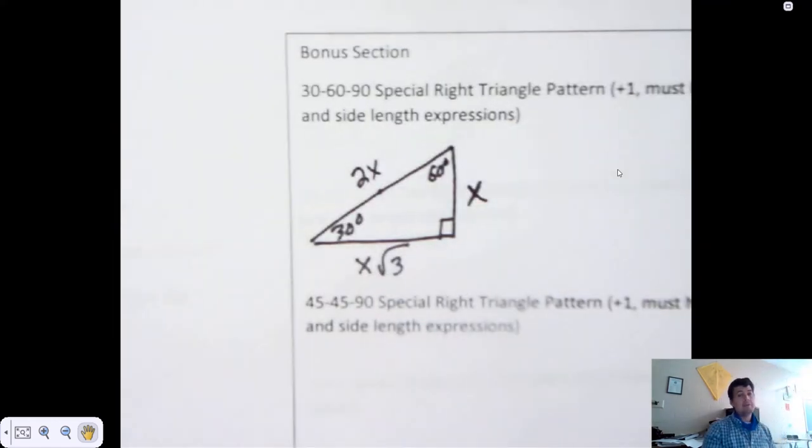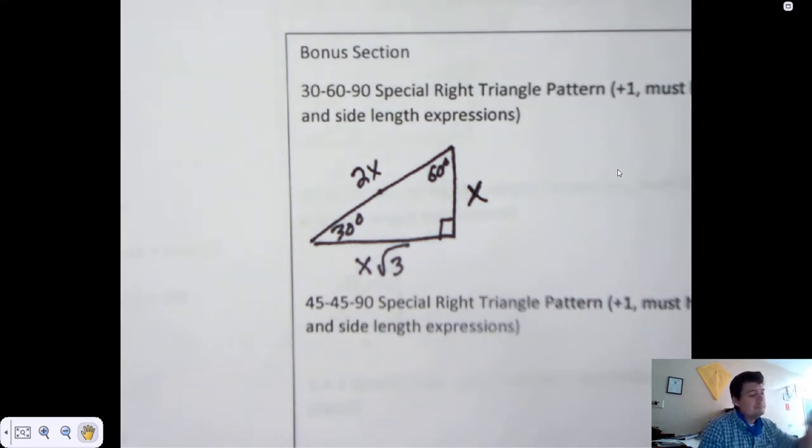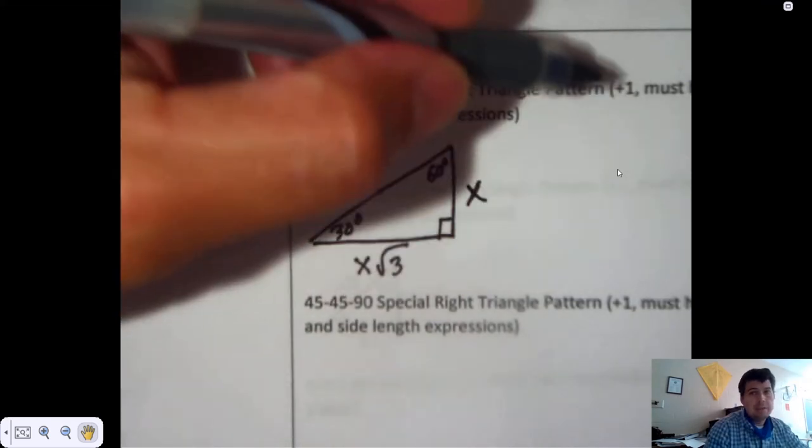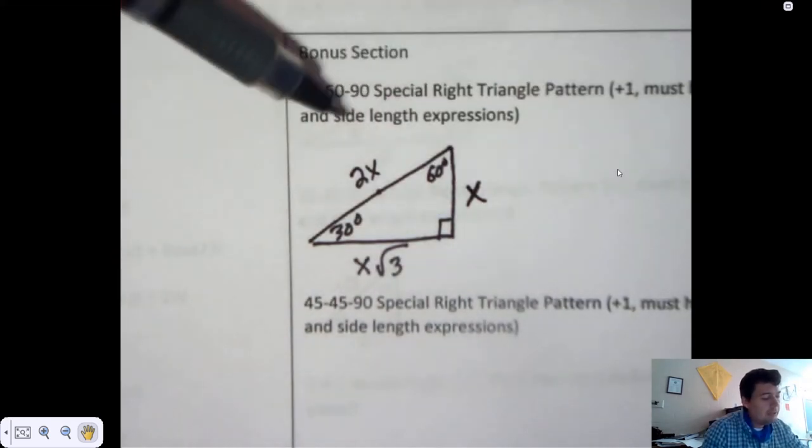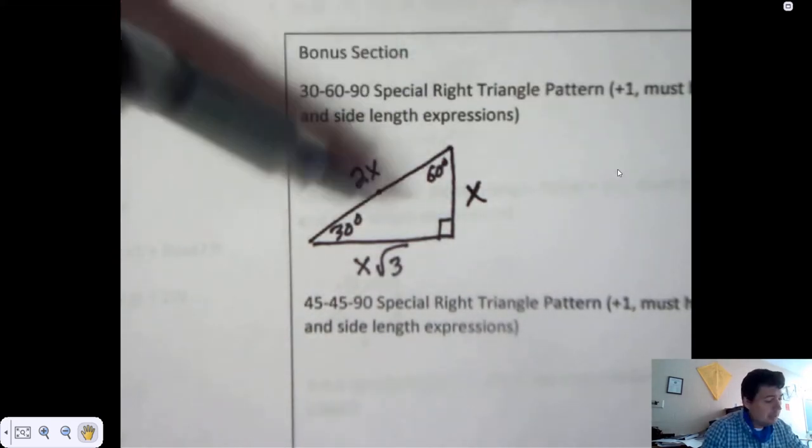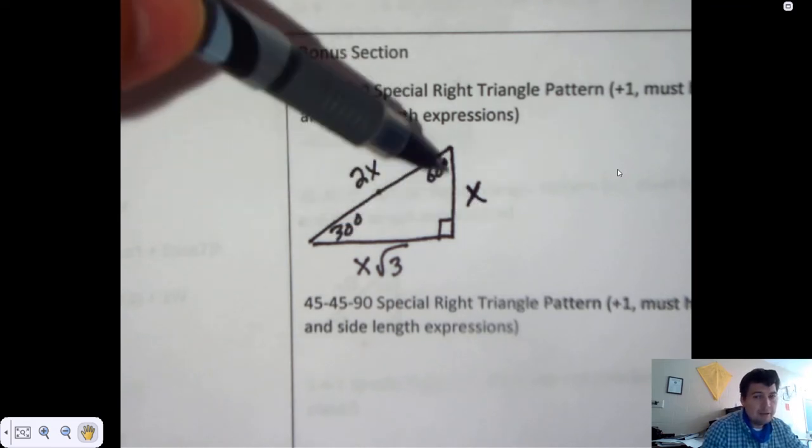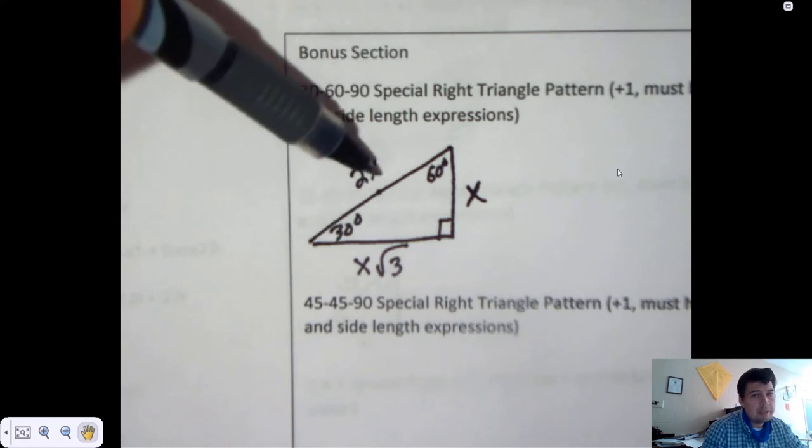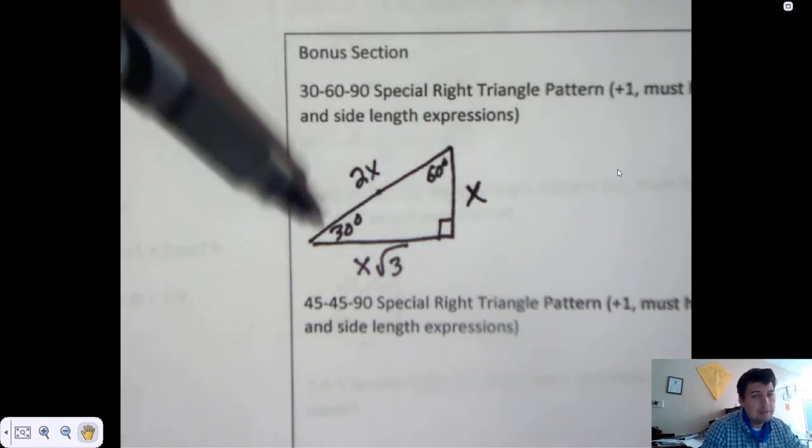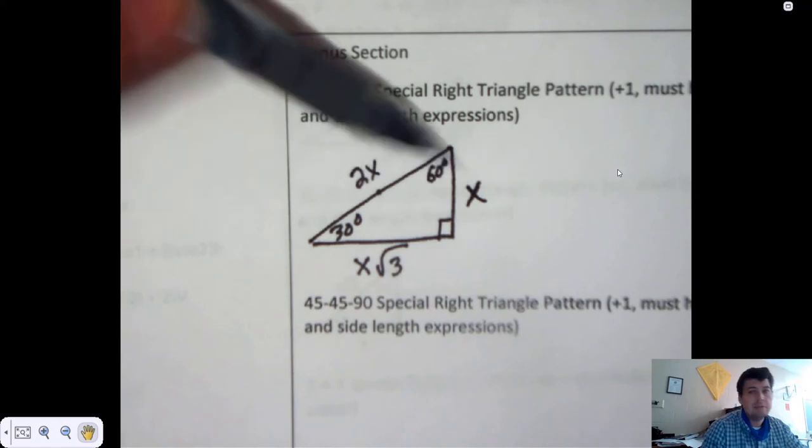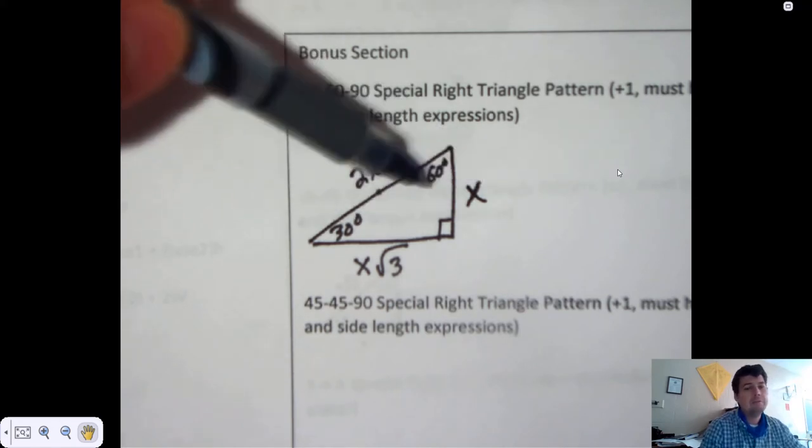There's an application problem and I'll go over that in just a minute. Notice if you get this triangle right you get an extra point, but you must have all the angles and side length expressions. The 30 degree angle has to be opposite of x, the 60 degree angle opposite of x root 3, and the 2x opposite of the right angle. Everything has to be in the right place for me to give you credit, and it will be blank just like this. I won't have the triangle drawn for you.